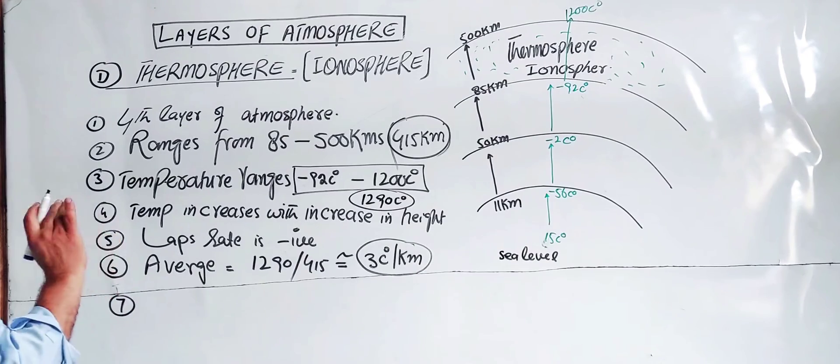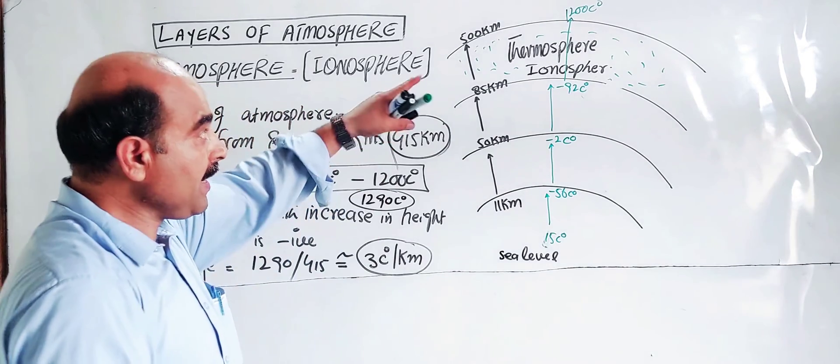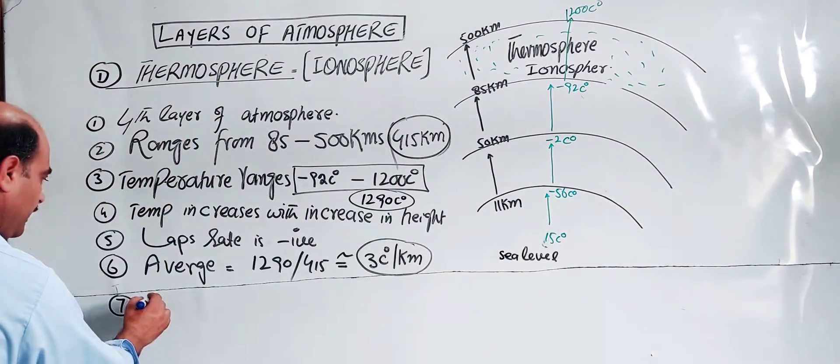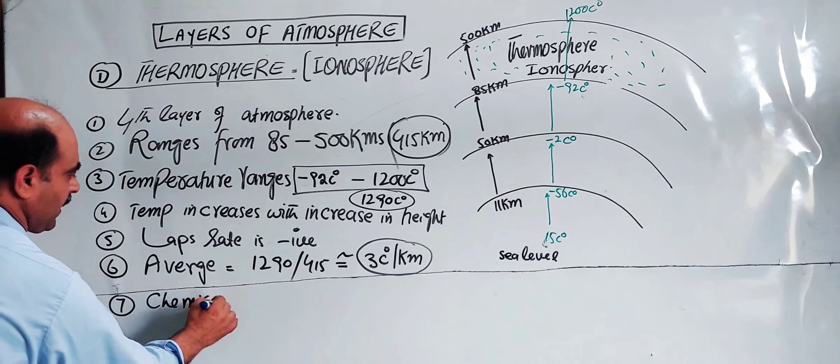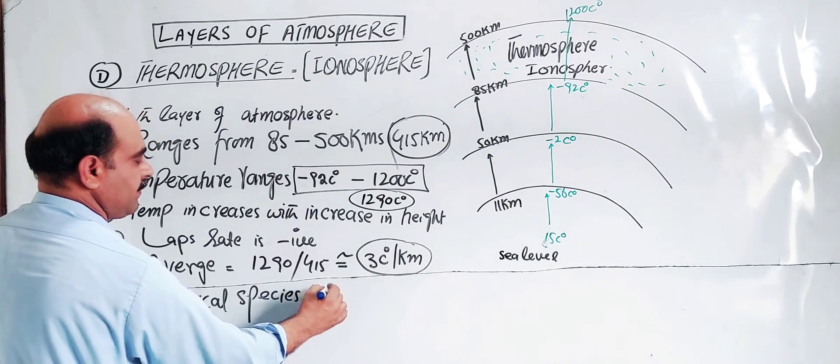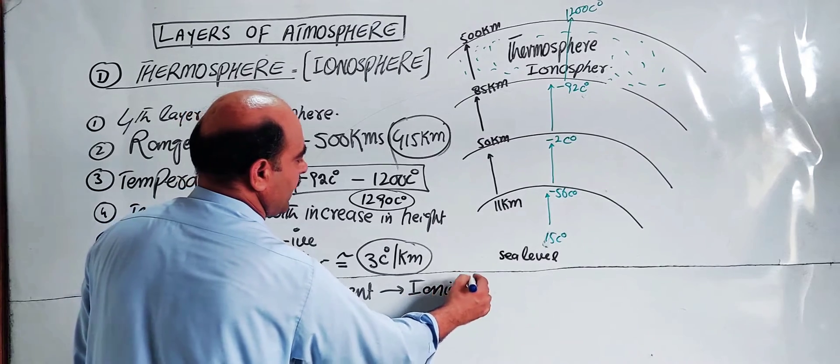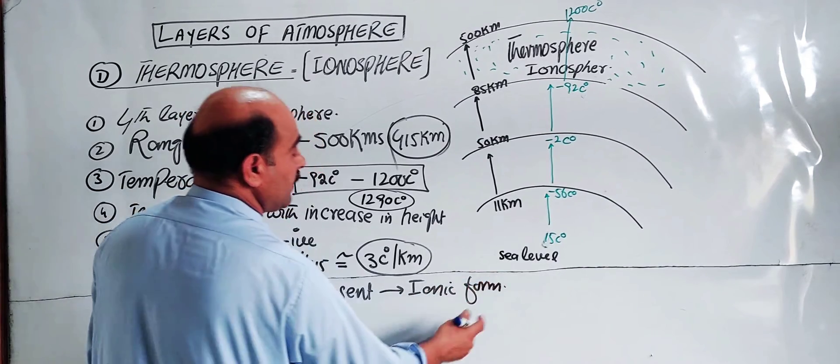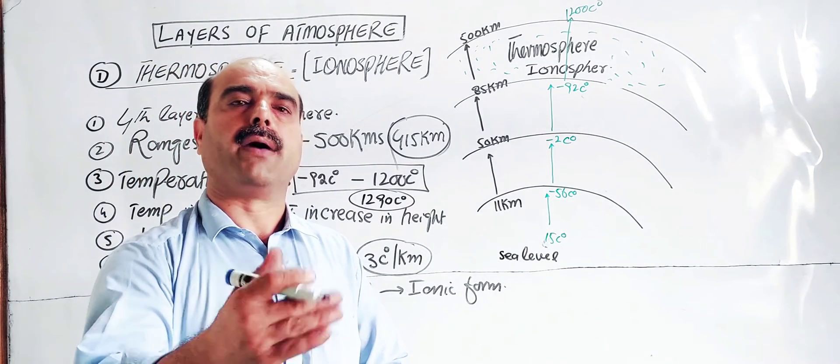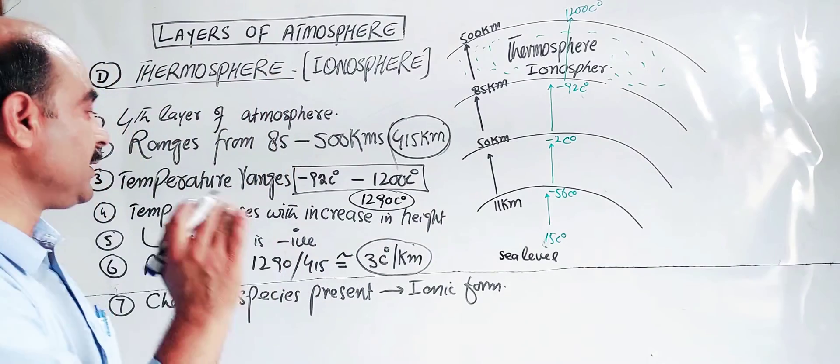Due to the presence of chemical species, most are in ionic form, which is why this area or region is also called ionosphere. Chemical species present will be in an ionic state or form due to high temperature and radiations. The molecules lose electrons and convert to ionic form.